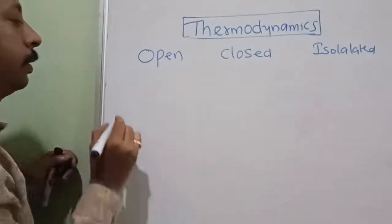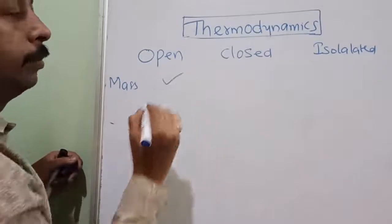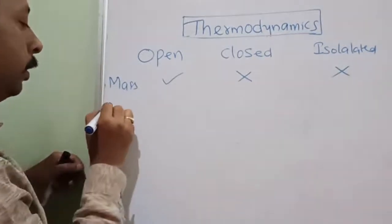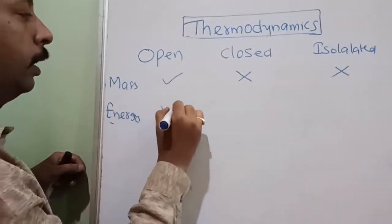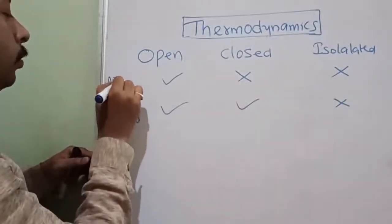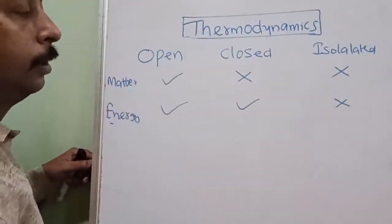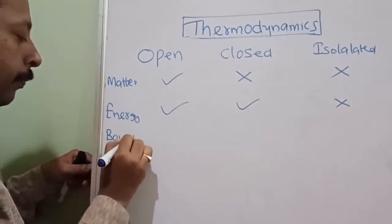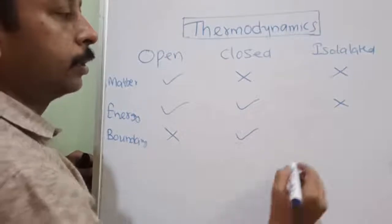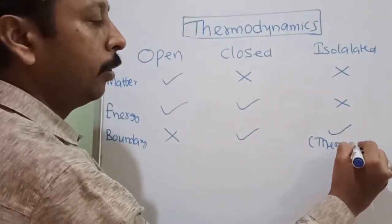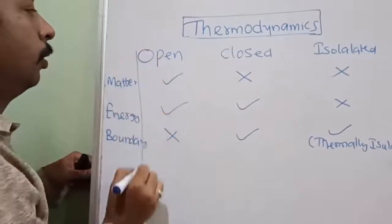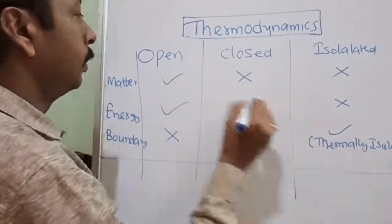For open system: mass can be exchanged, energy can be exchanged, boundary is not closed. For closed system: mass cannot be exchanged, energy can be exchanged, boundaries are closed but not thermally insulated. For isolated system: mass cannot be exchanged, energy cannot be exchanged, and the boundaries are thermally insulated. If you make proper notes it will amount to around five to six pages.